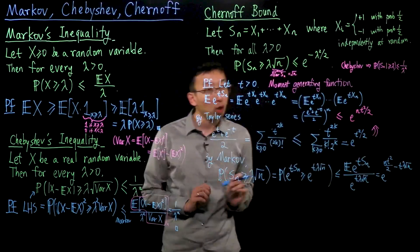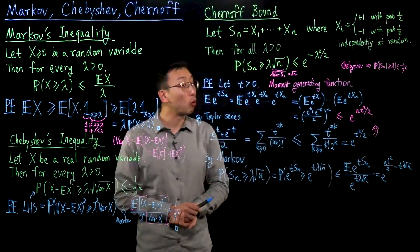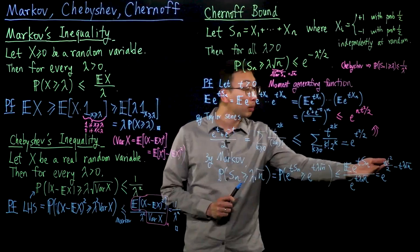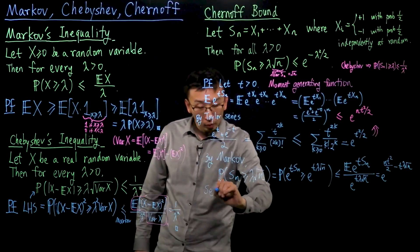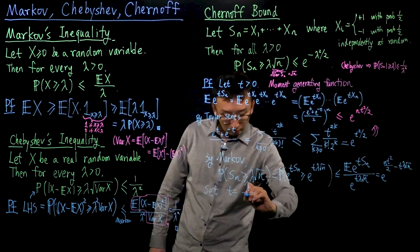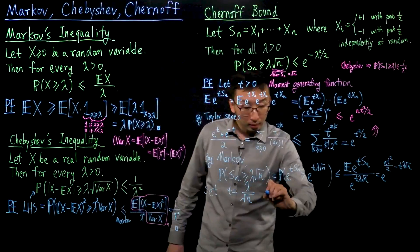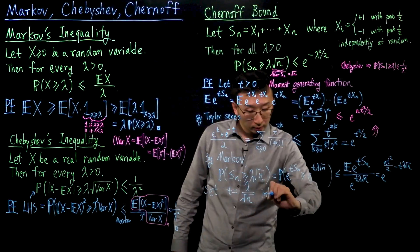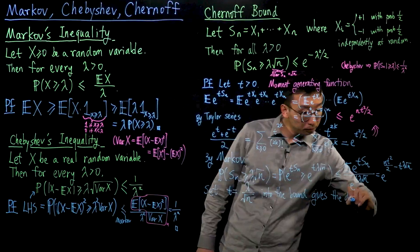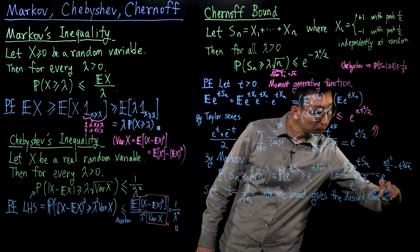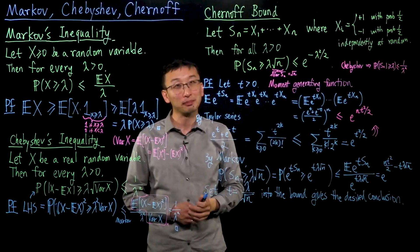The next step is to use the value of T that works most in our favor, by minimizing the expression on the right-hand side. Taking the derivative, the optimal T turns out to be lambda over root n. Setting this value of T into the bound gives the desired conclusion: the right-hand side of the Chernoff bound pops out. So that completes the proof of the Chernoff bound.